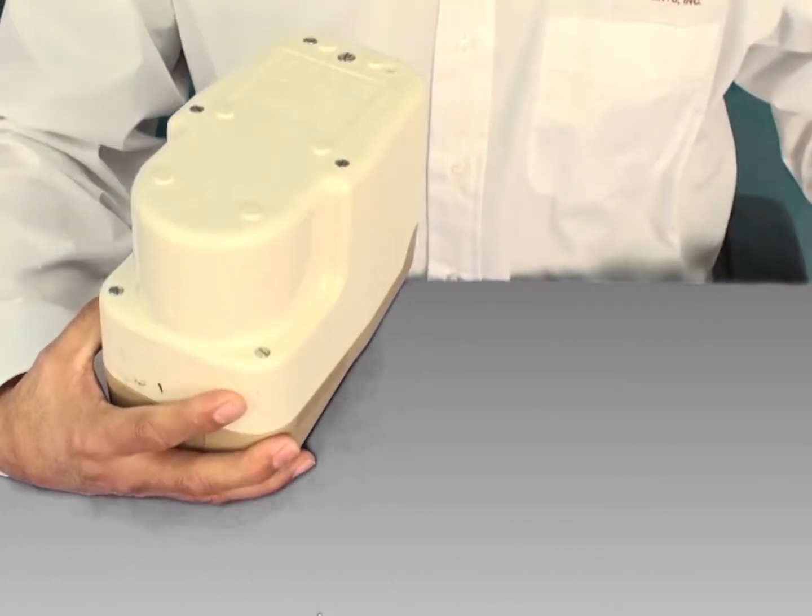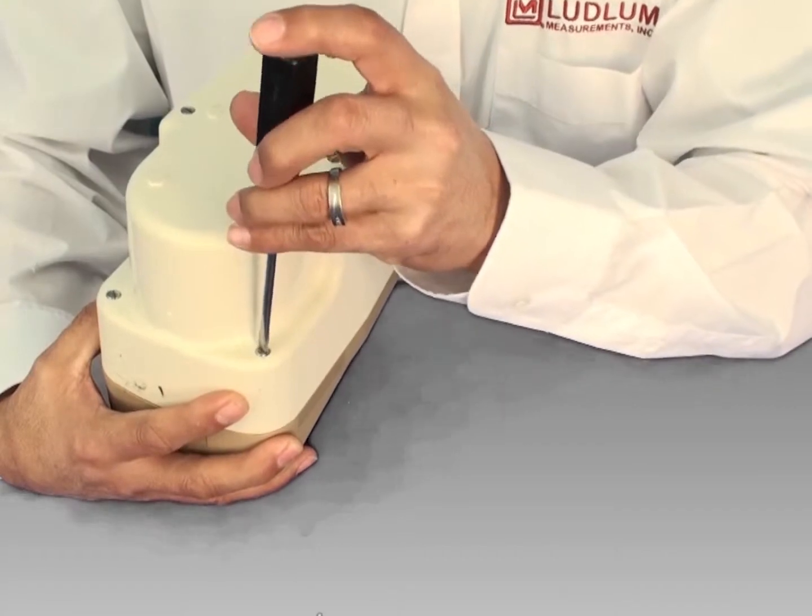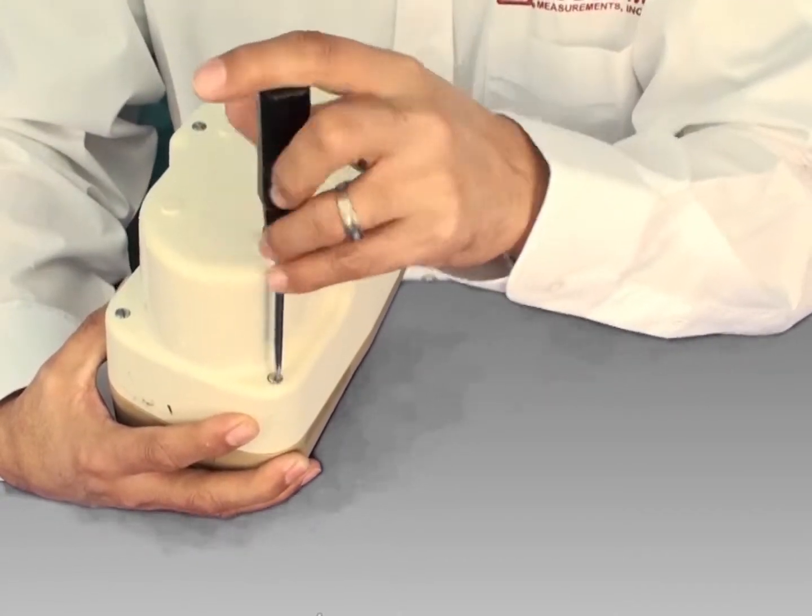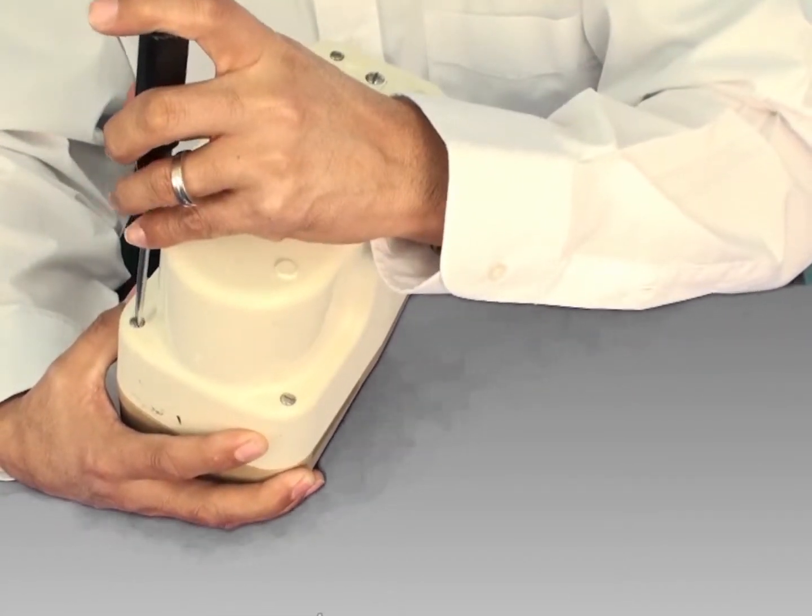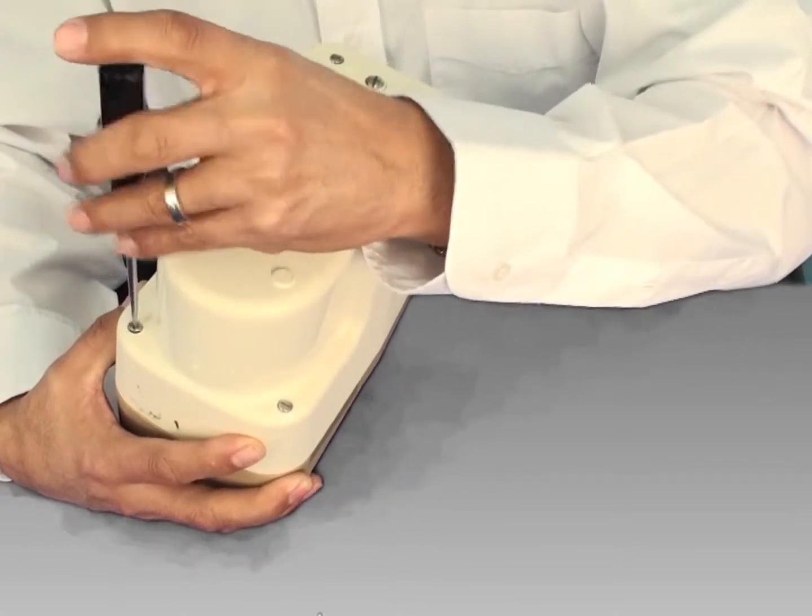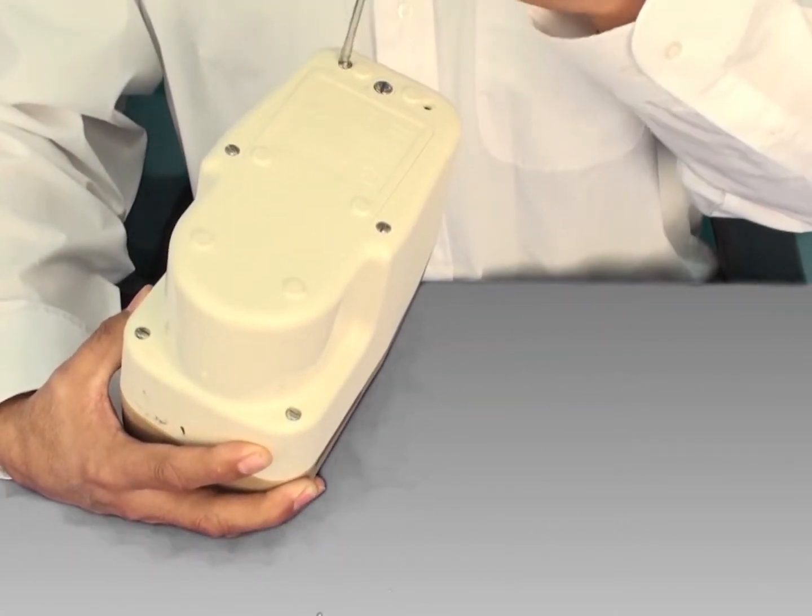Obviously, the first thing is to remove all of the screws that hold the bottom of the chassis to the rest of the instrument.